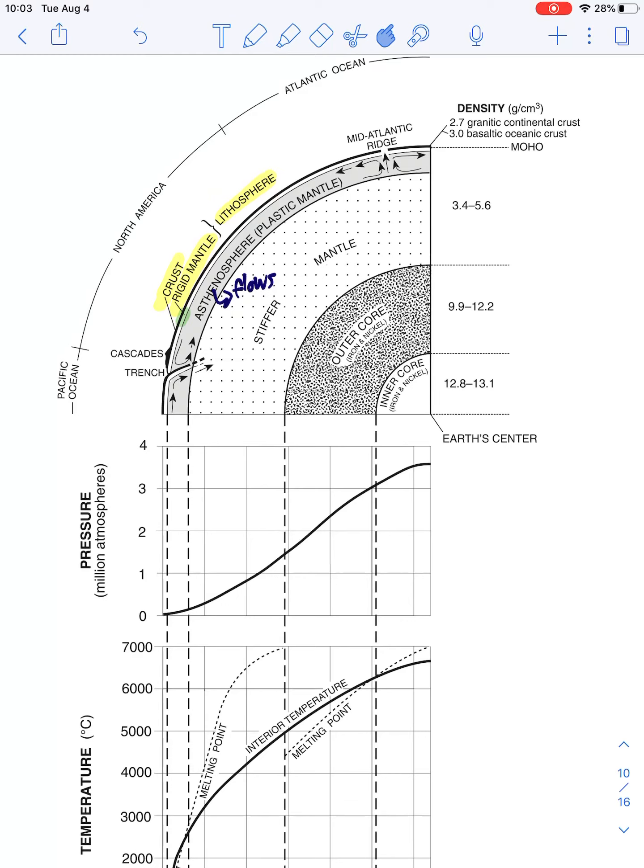A couple of other things about this diagram that are worth pointing out. You'll notice here that the crust, there's two different types of crust. We have continental crust, which is made of granite. That's why they say it's granitic and it has a lower density. And we also have basaltic oceanic crust, which means it's made of basalt and it has a higher density. That will become more important in tomorrow's lesson, but I wanted to just point that out to you. So those are the two types of crust.